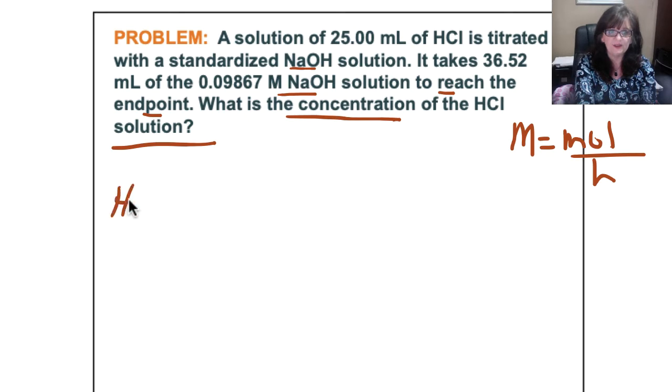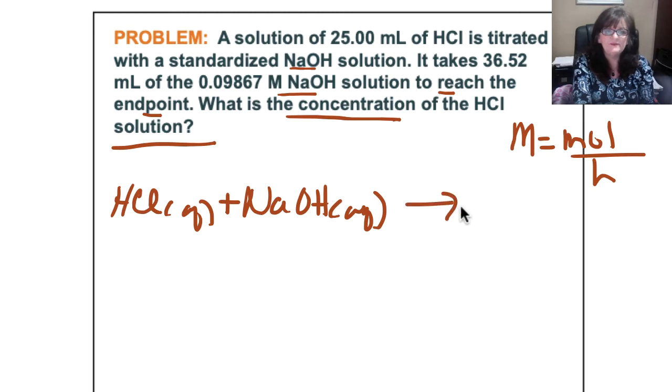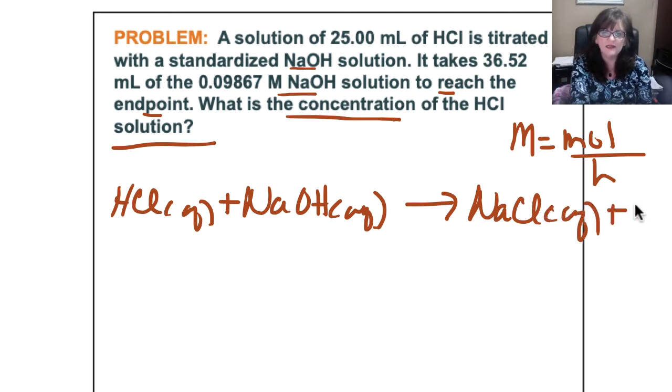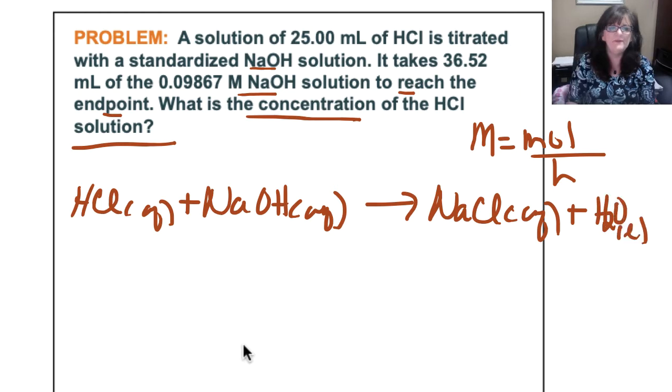So the first thing I'm going to do is write my balanced equation. We have hydrochloric acid with sodium hydroxide, and we have sodium chloride salt plus water. So the equation is balanced, so I have a 1 to 1 acid to base ratio.